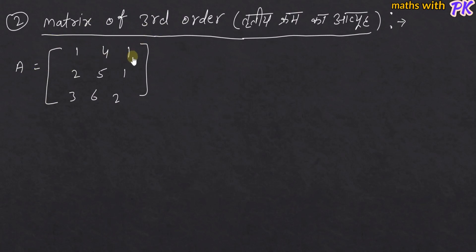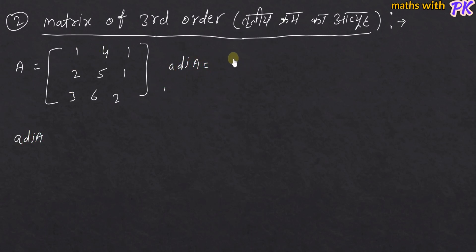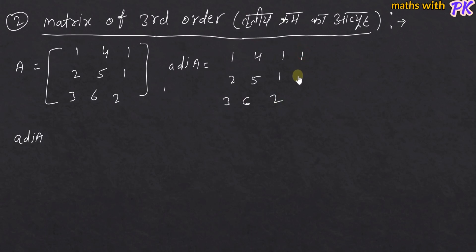This is A and this is Adjoint A. I will show you how we do Adjoint A for a third order matrix. We write the matrix as: 1, 4, 1, 2, 5, 1, 3, 6, 2. Now the first column becomes the first row: 1, 2, 3, 4, 5, 6.